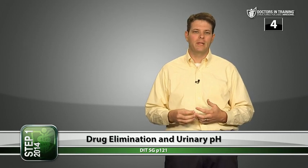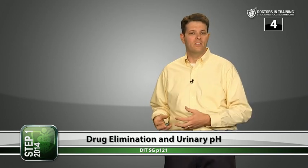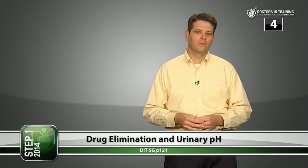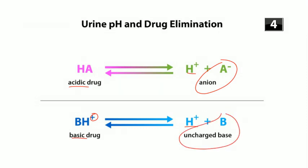When we talk about ionic species, we're mainly talking about drugs that are weak acids and weak bases. Weak acids dissociate into hydrogen ions and an anion. Weak bases start with a positive charge and dissociate into a hydrogen ion and an uncharged base. Pay attention to which forms are charged and which are uncharged — this affects drug elimination.